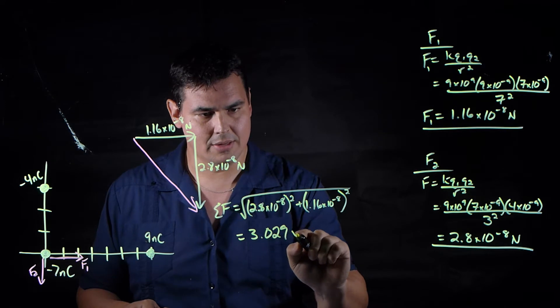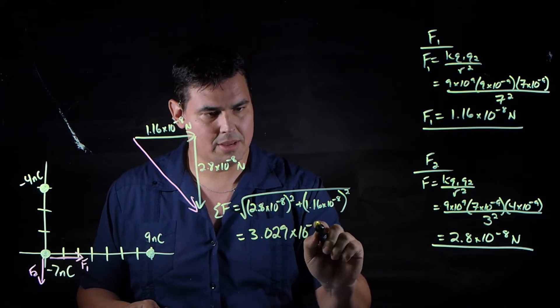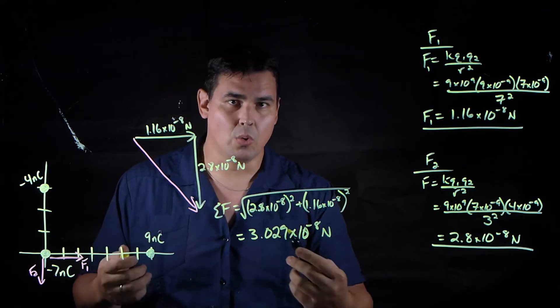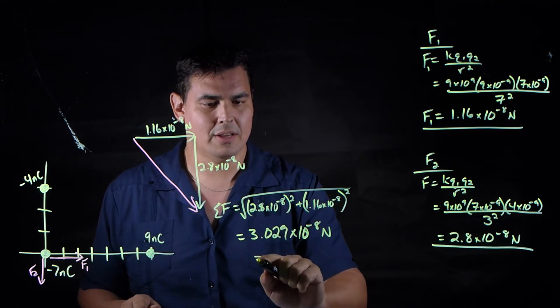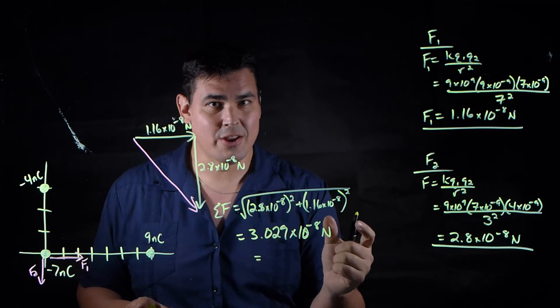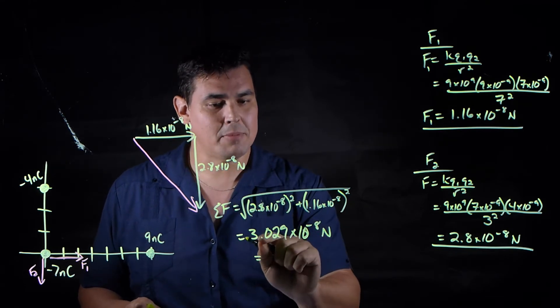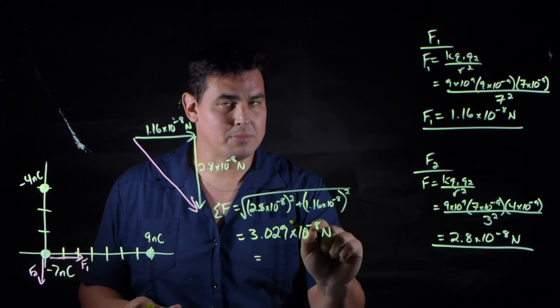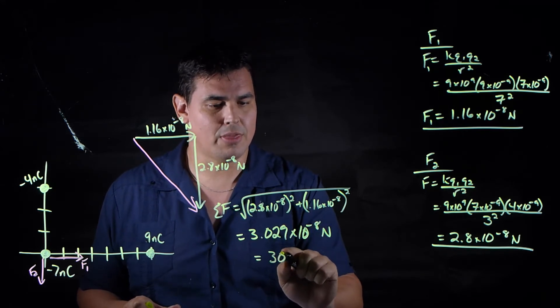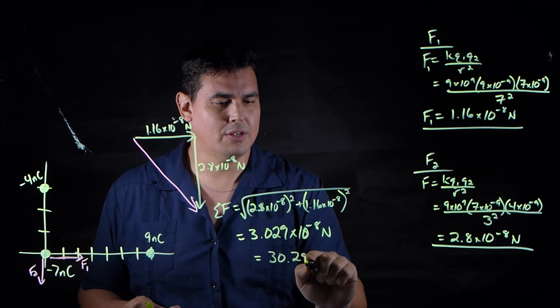Or if I want to put this in a decent unit, I could convert to nano newtons. Because nano is 10 to the minus 9, I'm going to move this over 1, so this becomes—this negative 8 becomes a negative 9—so that would be 30.29 nano newtons. That's how much this net force is.